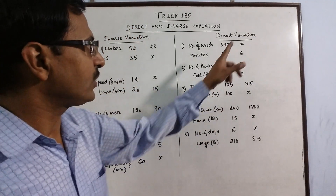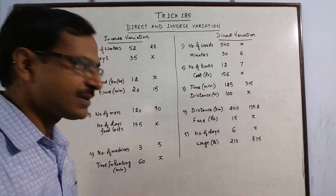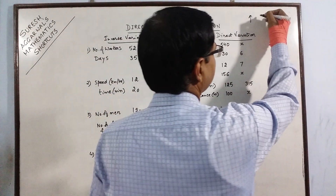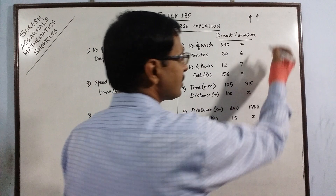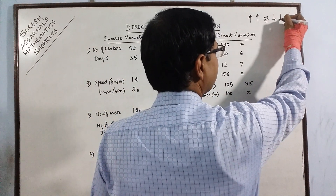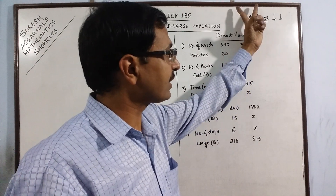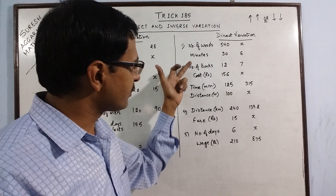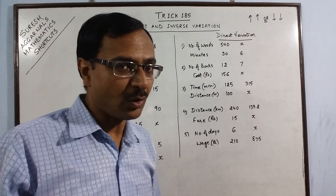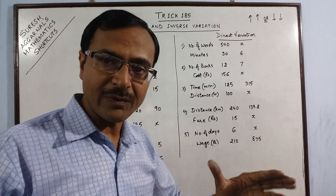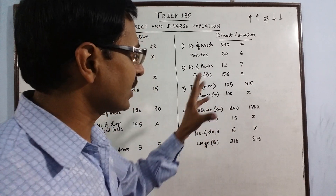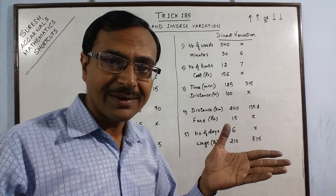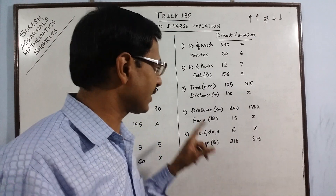To understand what is direct variation and inverse variation, we will take many examples. Whenever increase in one quantity results in increase of another quantity, or decrease of one quantity results in decrease of another quantity, then the two quantities which move together upwards or downwards are said to be in direct variation. For example, the number of items brought and the cost — if you bring more items, obviously the cost will be more. Similarly, if you travel more distance, you have to pay more fare. These are also in direct variation.